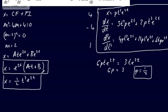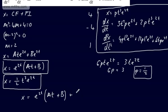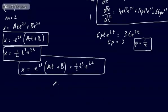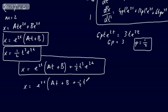We now have the complementary function and the particular integral. The general solution to the differential equation is x = e^(2t)(at + b) + (1/2)t³e^(2t), which we can factor as x = e^(2t)(at + b + (1/2)t³).